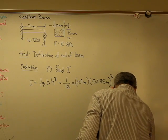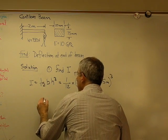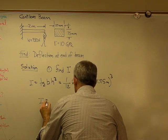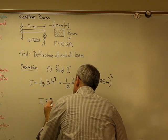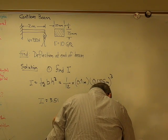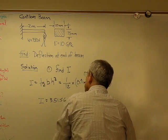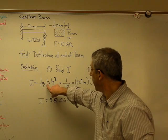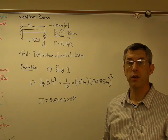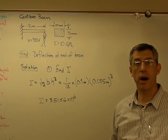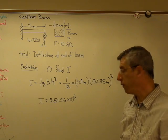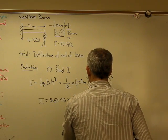I've got my little cheat sheet down here to make sure I do everything right. And I is going to turn out to be 3.5156 times 10 to the minus 6. And now we've got length times length cubed, so the units on I are going to be length to the 4th. So that's going to be meters to the 4th.